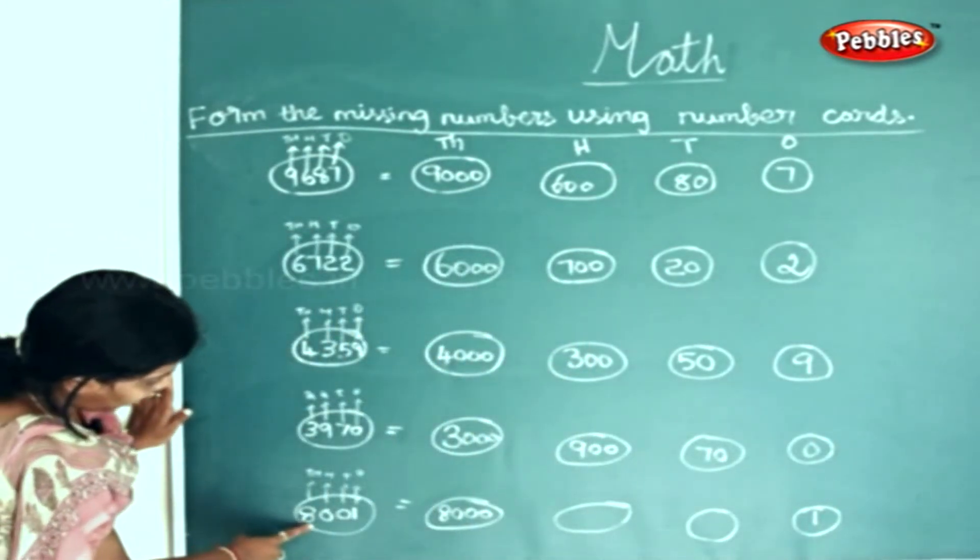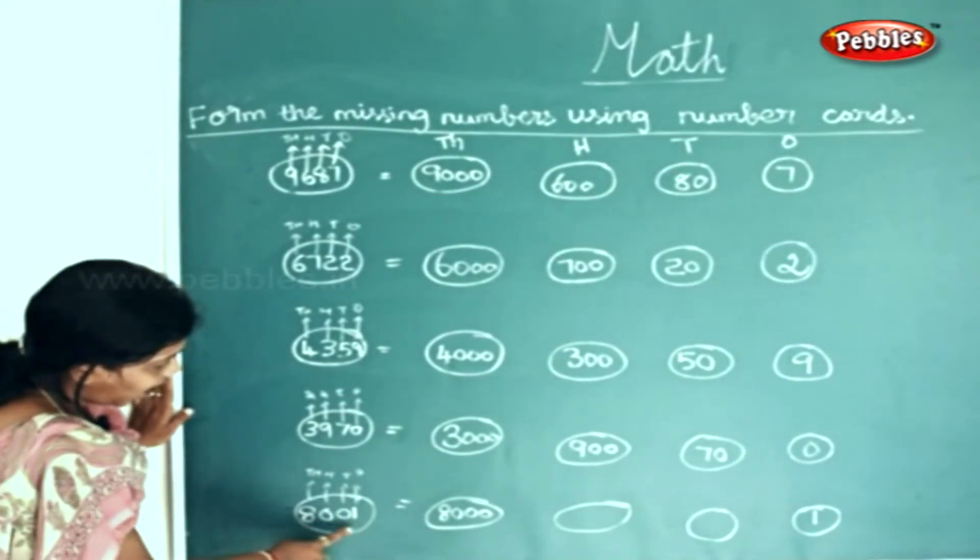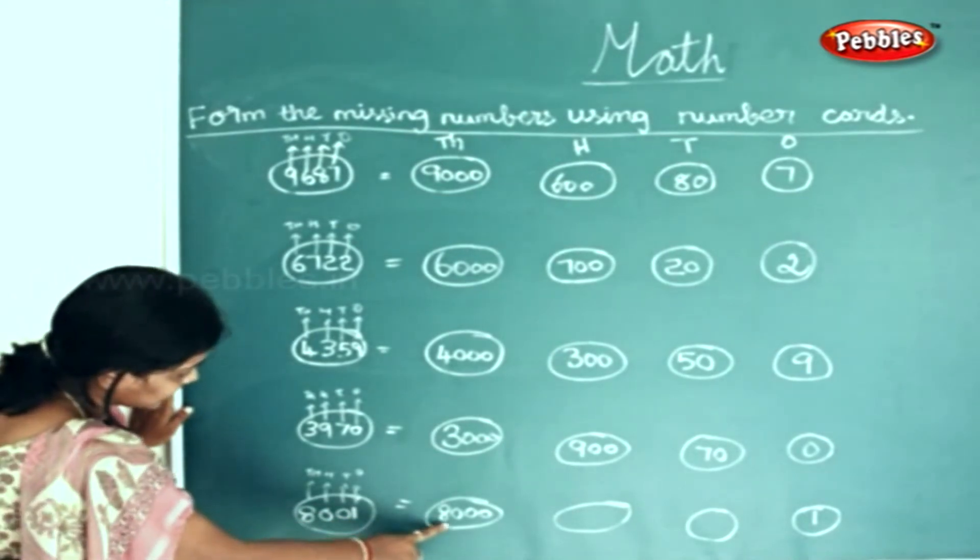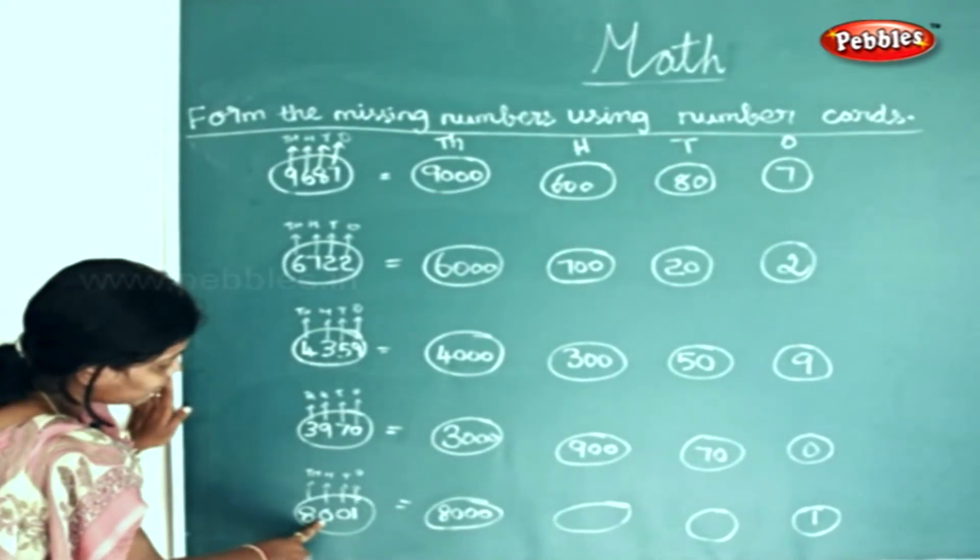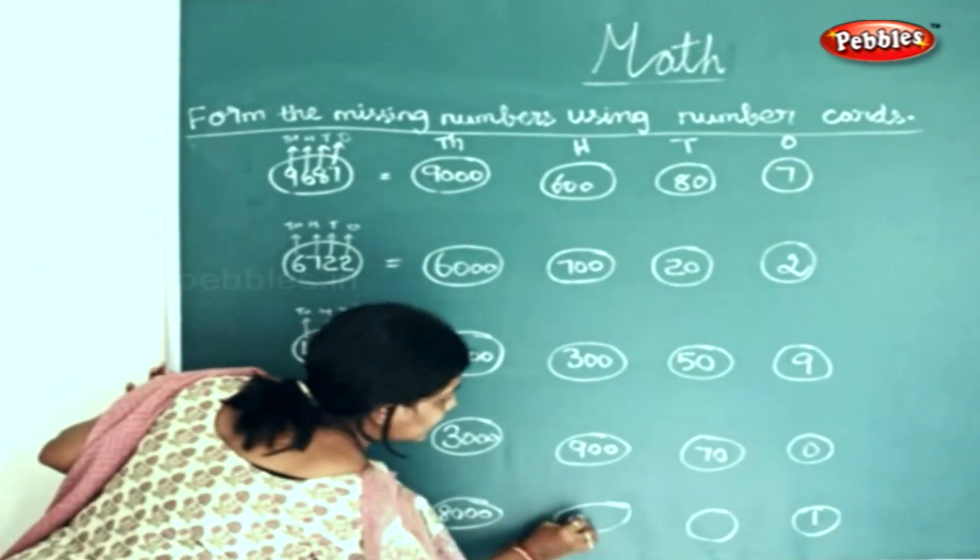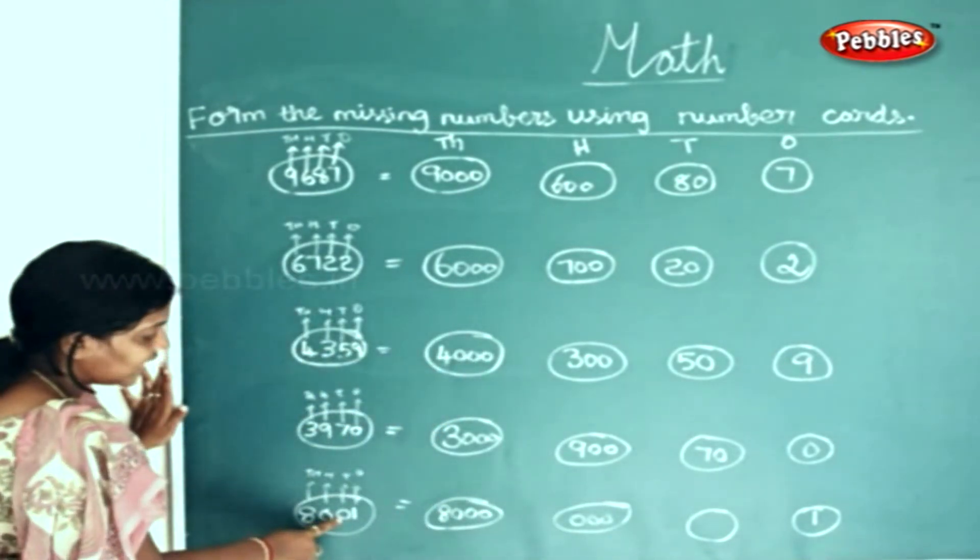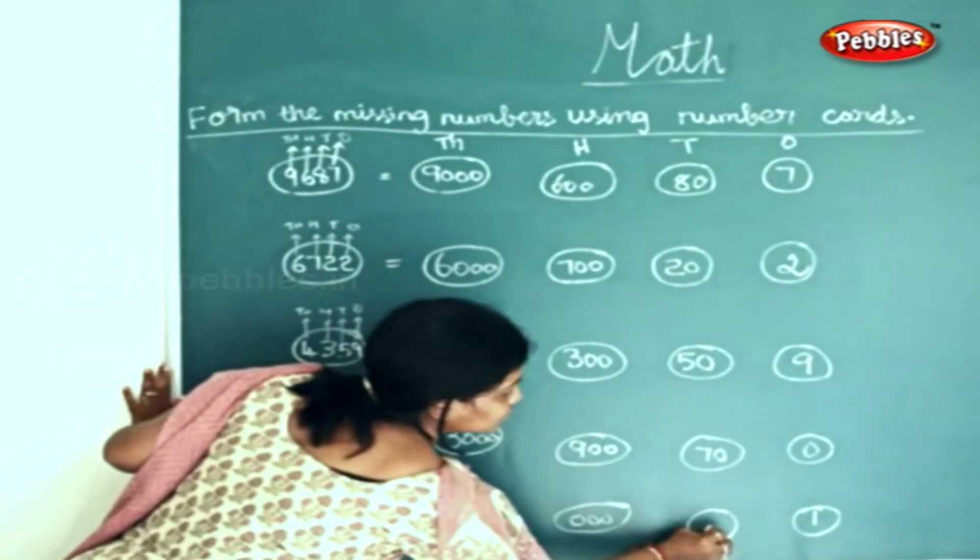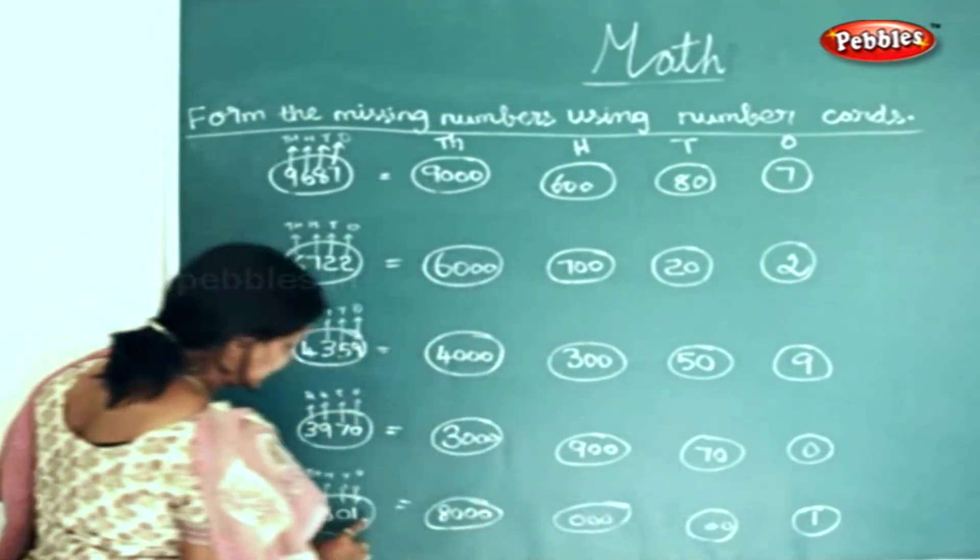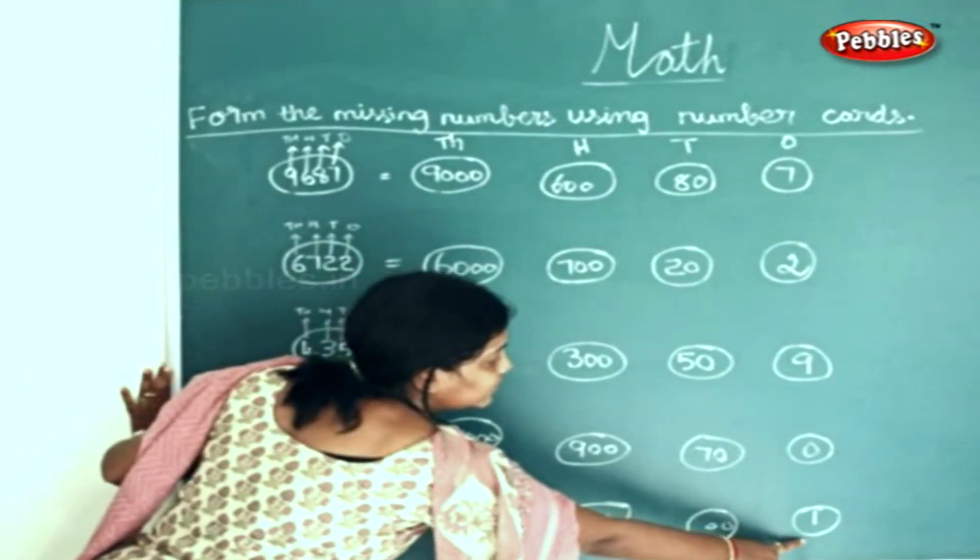In this sum, 8,001. How many thousands? 8 thousands. In the hundreds place, you have 0, so we will write 0. Again in the tens place, you have 0. In the ones place, you have 1, which has already been given.